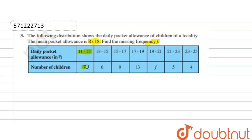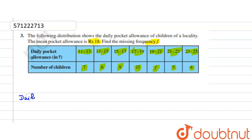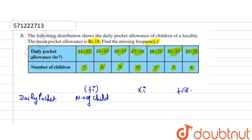The number of children in the interval 11 to 13 is 7, in 13 to 15 the number of children is 6, in 15 to 17 it is 9, in 17 to 19 it is 13. For 19 to 21 we have to find the frequency f. For 21 to 23 it is 5, and 23 to 25 it is 4. Now we make the table with daily pocket allowances, number of children (frequency), xi, and fi·xi.